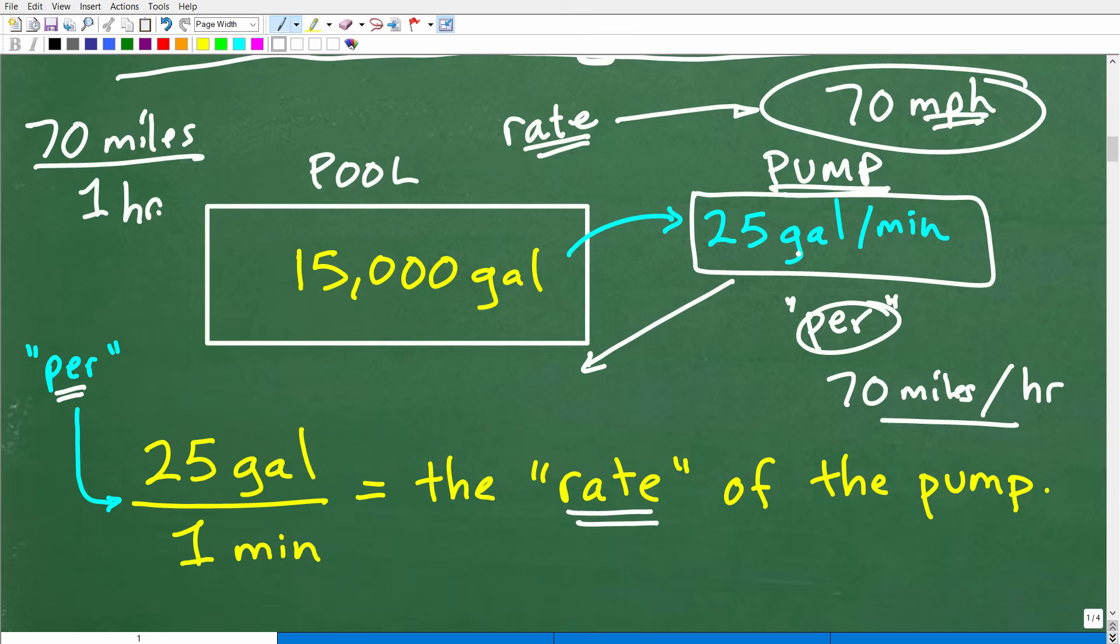The word per is like a fraction bar. So 25 gallons per one minute, 70 miles per one hour. The technical definition of a rate in mathematics is basically a fraction where the numerator and denominator have different units of measure. So here, the unit of measure for our numerator is gallons, which is volume. We're comparing volume with minutes, with time.